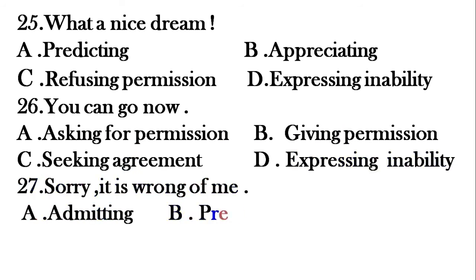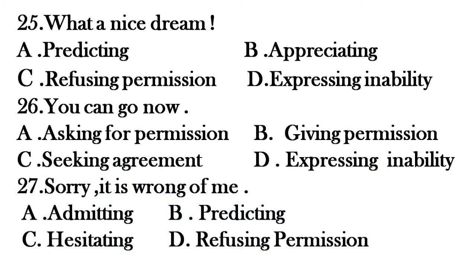Question number twenty-five: 'What a nice dream!' Options: predicting, appreciating, refusing permission, expressing inability. Question number twenty-six: 'You can go now.' Options: A: asking for permission, B: giving permission, C: seeking agreement, D: expressing inability. Question number twenty-seven: 'Sorry, it is wrong of me.' Options: A: admitting, B: predicting, C: hesitating, D: refusing permission.